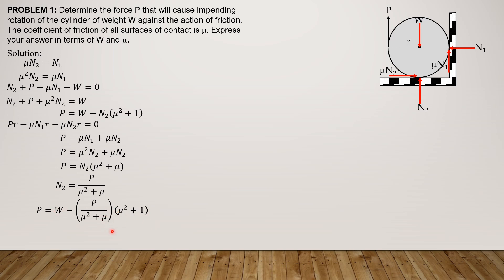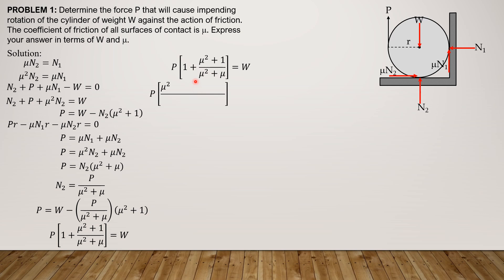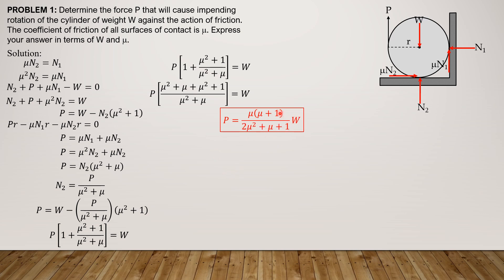Transposing terms: P times (mu² plus mu plus mu² plus 1) divided by (mu² plus mu) equals W. Simplifying by algebra: P times (mu² plus mu plus mu² plus 1) over (mu² plus mu) equals W. Finally, P equals mu times (mu plus 1) times W divided by (2mu² plus mu plus 1), expressed in terms of mu and W and cannot be simplified further.